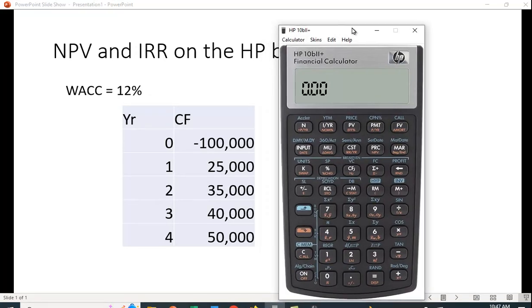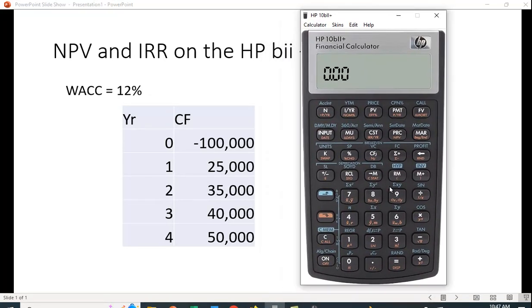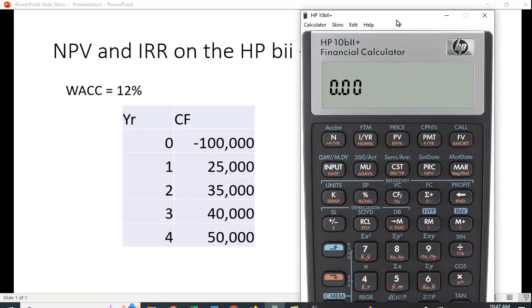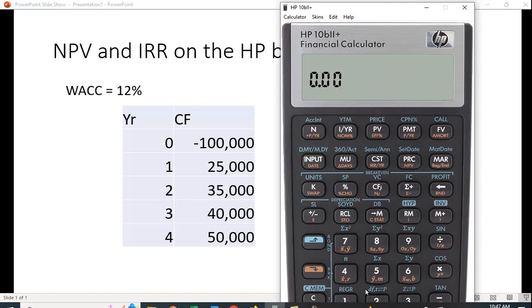Let me just zoom up on this so you can see some of the functions. I'll have to zoom out because otherwise it cuts off part of my calculator. What you want to do is type in the numbers and then put them in by hitting this CFJ. The first number you put in will be CF0, the second number will be CF1, etc.